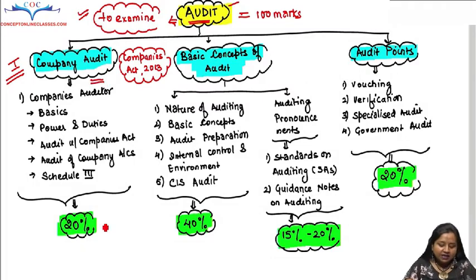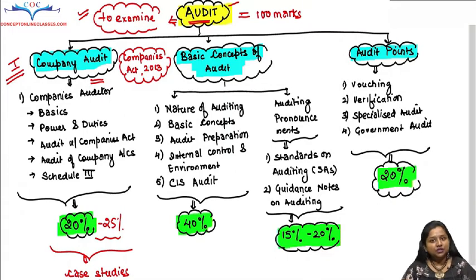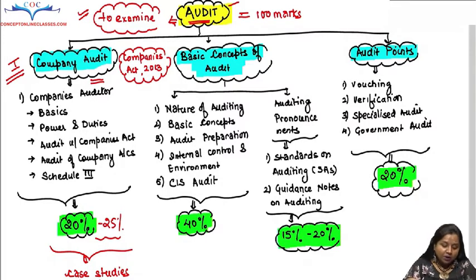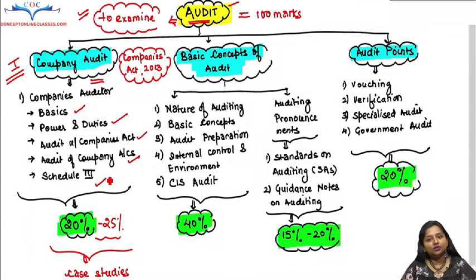Company Audit carries approximately 20 to 25 percent weightage, where questions generally come in case study form. Case studies mean the examiner gives you certain particular situations and wants to evaluate whether, as an auditor, you can identify which section and which law applies to that situation, and expects your answer accordingly. Company Audit covers who the auditor will be, their powers and duties, what audits are mandatory under the Companies Act, and some provisions of Schedule 3.